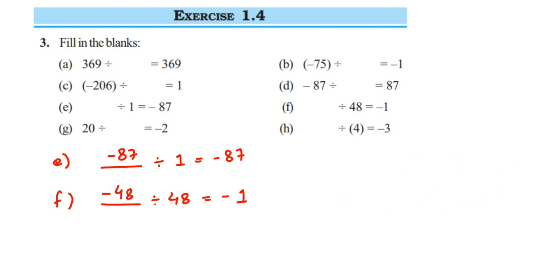Problem g: 20 divided by what gives -2. Everything here points to 20 divided by 10 being 2, and since the answer is negative, it will be -10.